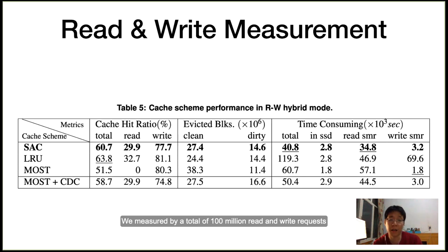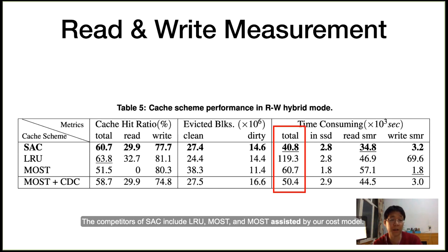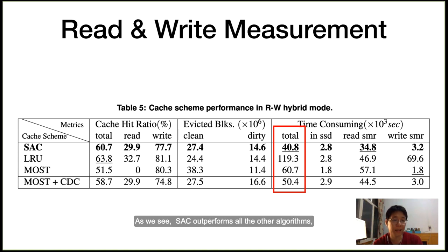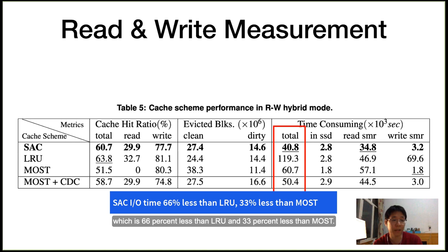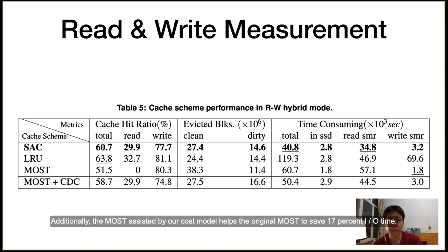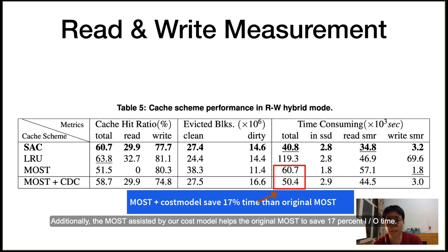Let's check out how it performs. We measured with a total of 100 million read and write requests. The competitors of SAC include LRU, MOST, and MOST assisted by our cost model. As we see, SAC outperforms all other algorithms. It has the shortest I/O time to finish all requests, which is 66% less than LRU and 33% less than MOST. Additionally, MOST assisted by our cost model helps the original MOST to save 17% I/O time.